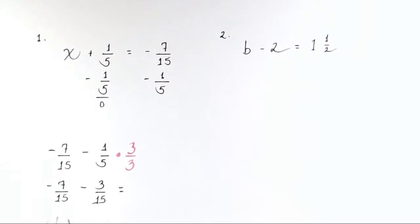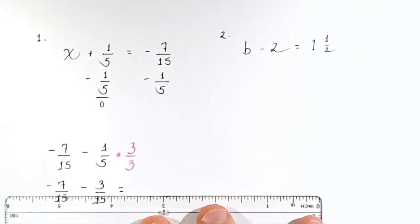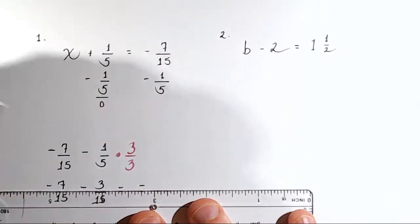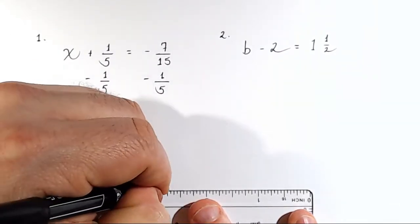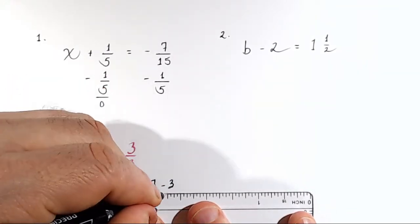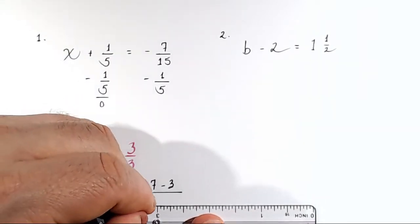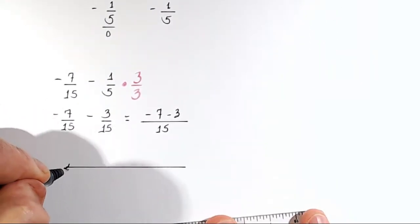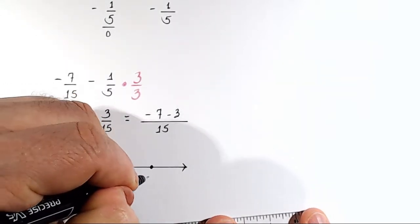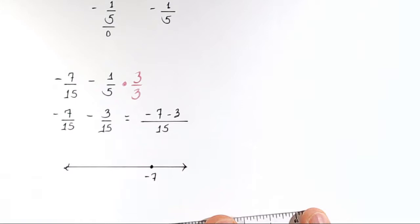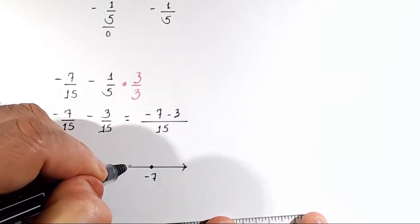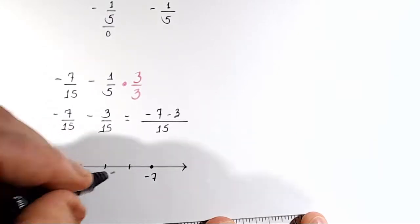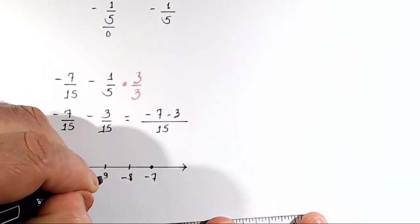And now we can actually perform the operation. Because negative 7 fifteenths minus 3 fifteenths is equal to the difference of the numerators, negative 7 minus 3, over all of it over 15. So what is negative 7 minus 3? So on a number line, here's the number line. You're at negative 7. And you're subtracting 3, so you're going to be moving to the left.